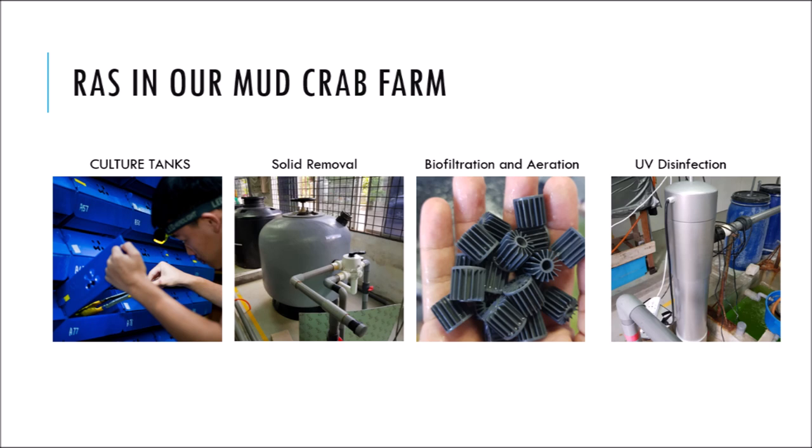This is done with the help of aeration. Lastly, there is the UV filter, in which UV light is used to kill off any pathogens, bacteria, and viruses that might jeopardise the crabs. After that, the water is recirculated back into the culture tanks and reused.